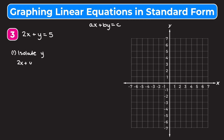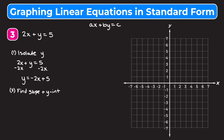We want to get y by itself, so we isolate y. We have 2x plus y is equal to 5 and we subtract 2x from both sides. On the left we're left with y. On the right we have negative 2x plus 5, putting it in slope-intercept form y equals mx plus b. Our slope m is negative 2 and our y intercept b is positive 5.